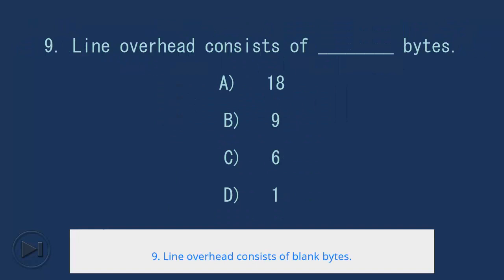9. Line overhead consists of blank bytes. A. 18, B. 9, C. 6, D. 1. Answer: A. 18.